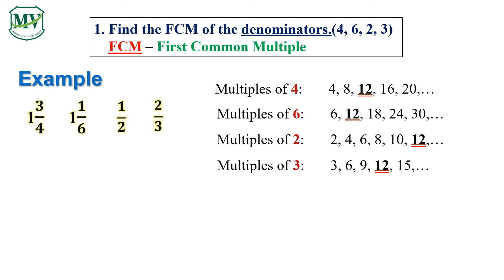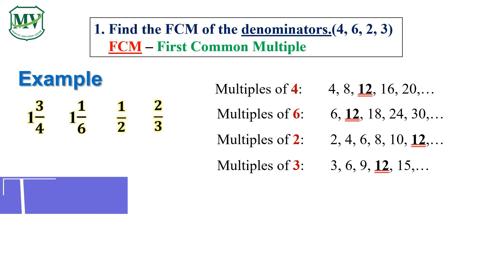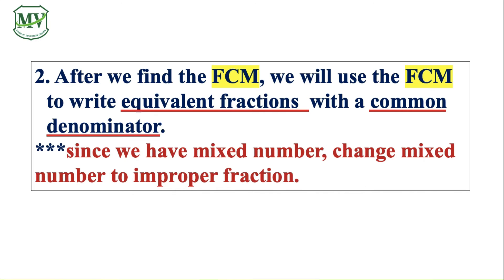So we can see that 12 is the first common multiple of 4, 6, 2, and 3. We need to move to the next step. After finding the first common multiple, we will use it to write equivalent fractions with a common denominator.